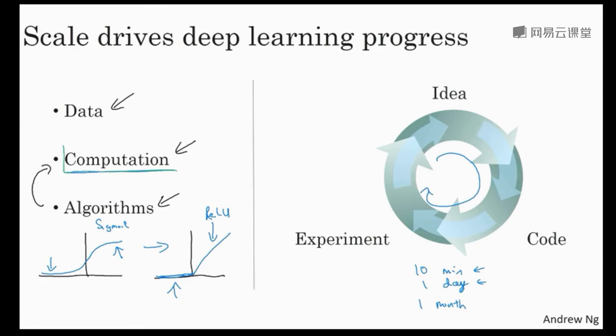And so faster computation has really helped in terms of speeding up the rates at which you can get an experimental result back. And this has really helped both practitioners of neural networks as well as researchers working in deep learning iterate much faster and improve ideas much faster. And so all this has also been a huge boon to the entire deep learning research community, which has been incredible at inventing new algorithms and making nonstop progress on that front. So these are some of the forces powering the rise of deep learning.